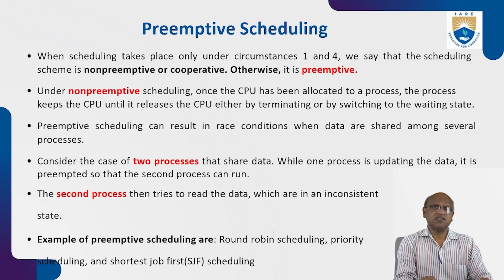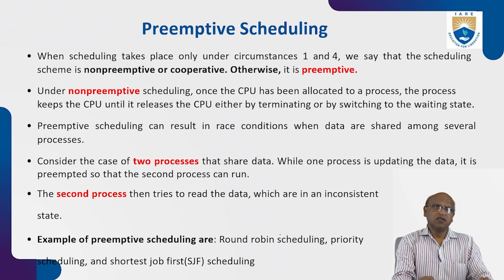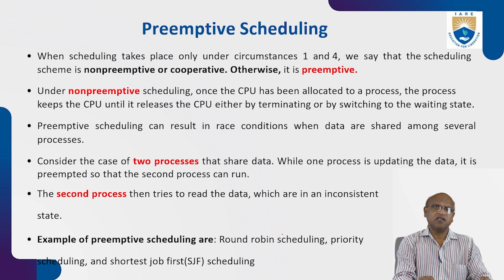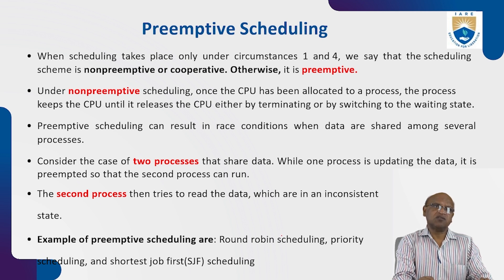Preemptive scheduling can result in race conditions when data are shared among several processes. Consider the case of two processes sharing data: while one process is updating that data it is preempted so that the second process can run. The second process then tries to read the data, which is in an inconsistent state — the data is not correct. We'll see the different types of CPU scheduling algorithms: round robin, priority scheduling, and shortest job first scheduling.